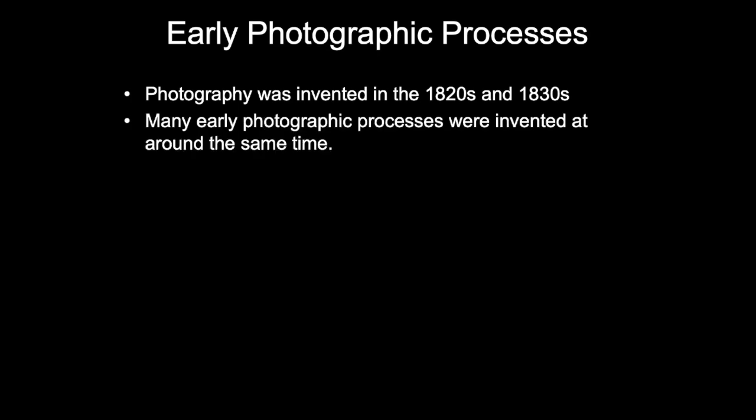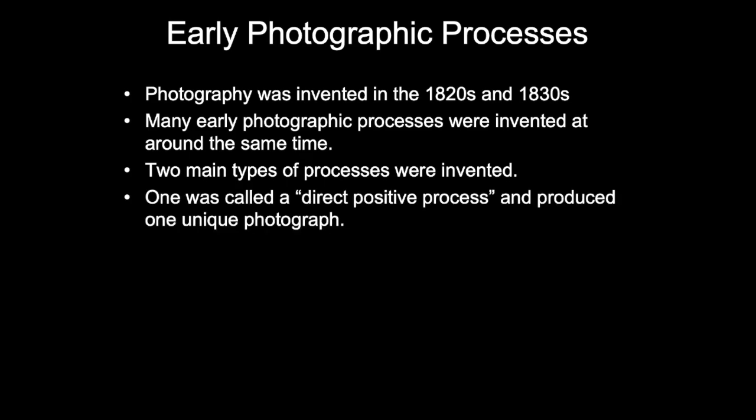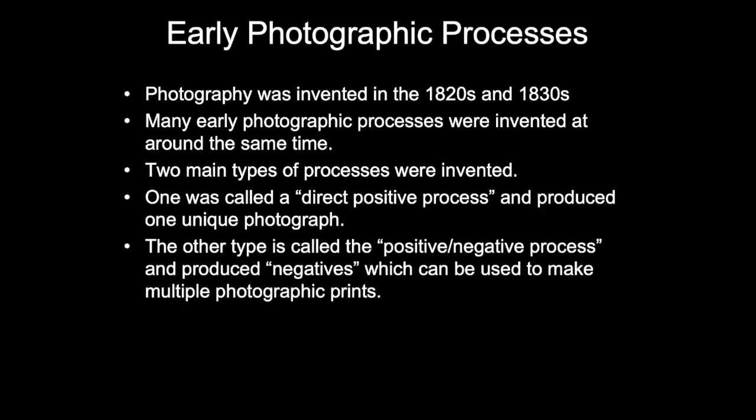Photography was invented in the 1820s and 1830s. Many early photographic processes were invented at around the same time. Two main types of processes were invented: one was called a direct positive process and produced one unique photograph, and the other type is called the positive-negative process, which produced negatives that can be used to make multiple photographic prints.